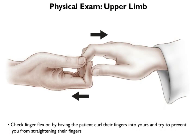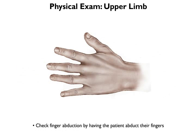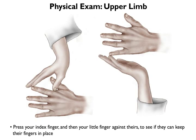Check finger flexion by having the patient curl their fingers into yours and try to prevent you from straightening their fingers. This technique is more reliable than having the patient squeeze your fingers. Next, check finger abduction by having the patient abduct their fingers. Press your index finger against theirs and your little finger against theirs to see if they can keep their fingers in place.